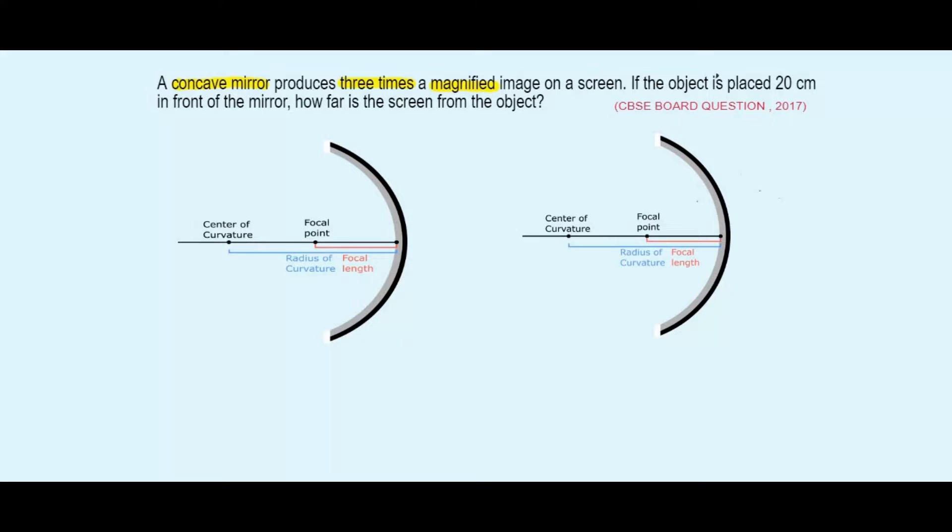The first case a concave mirror produces a magnified image is when the object is between the center of curvature and the focus. So when an object is placed here, one ray goes parallel to the principal axis; after reflection, it will pass through the focus. Another one will be directed towards the center of curvature like this. It will reflect back and come, and these two rays, let's say they meet here. So this becomes your magnified image. This is one case.